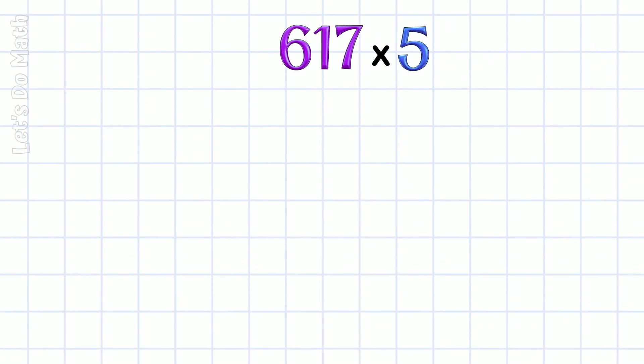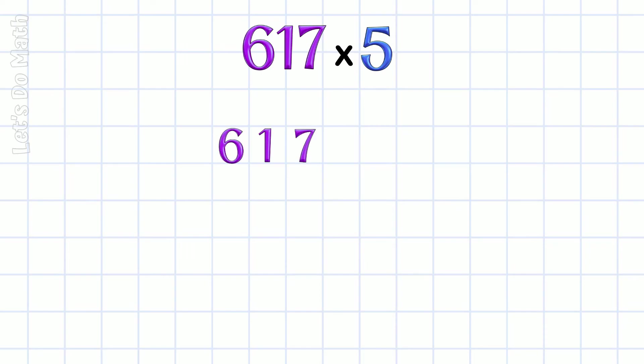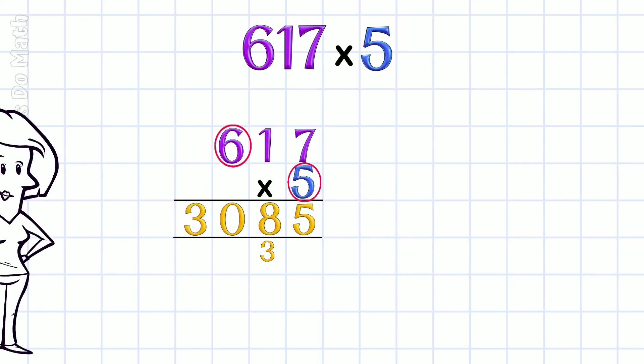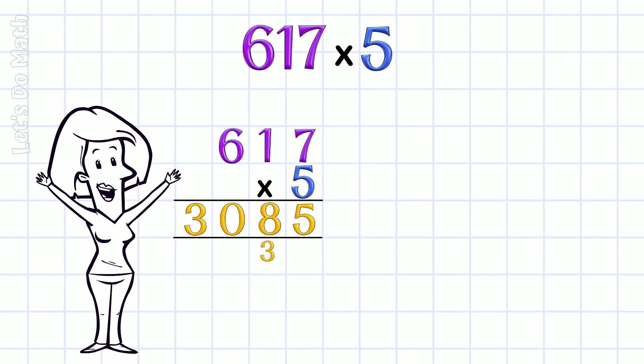Can we manage this? Set it up first. Always start at the right in the ones column and work your way over. So, 7 × 5 is 35. You can see I've got 35 right here, and I'm going to add this 3 in my next answer. Now, 1 × 5 is 5, plus that 3 is 8. And finally, 6 × 5 is 30. 3085.